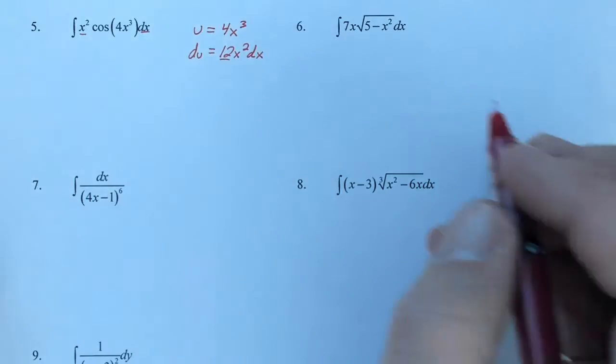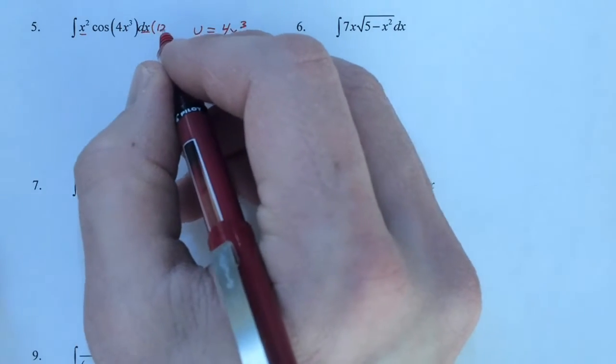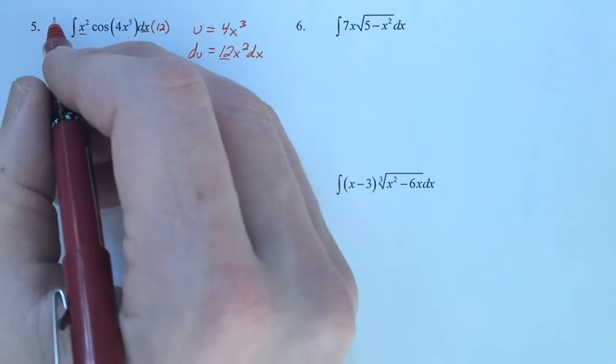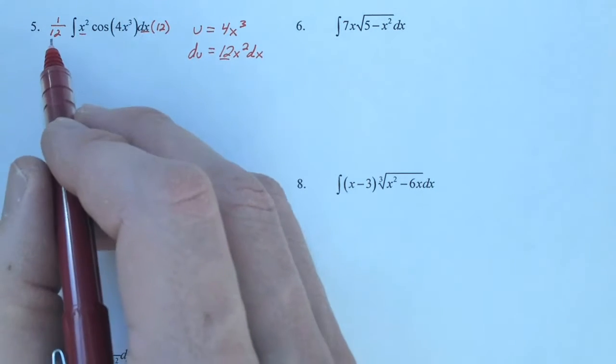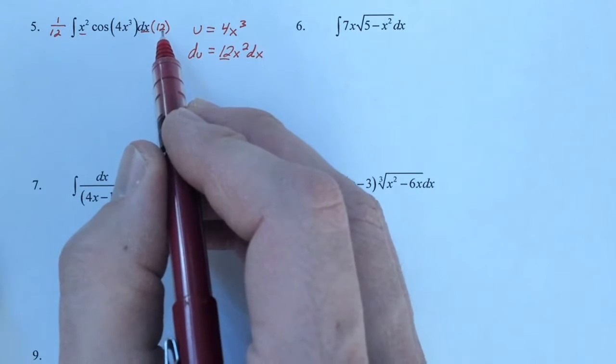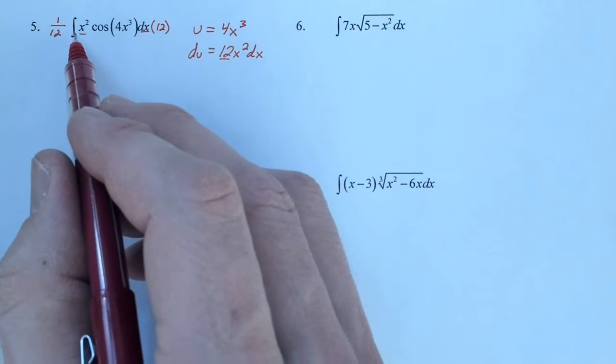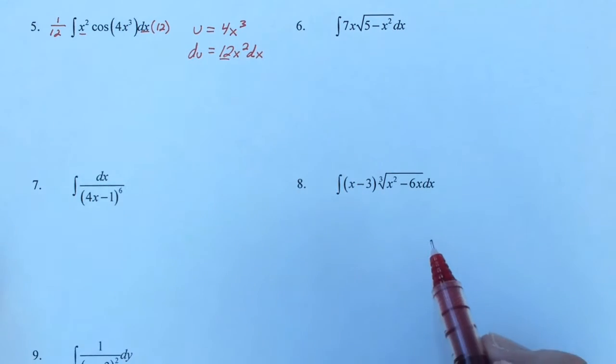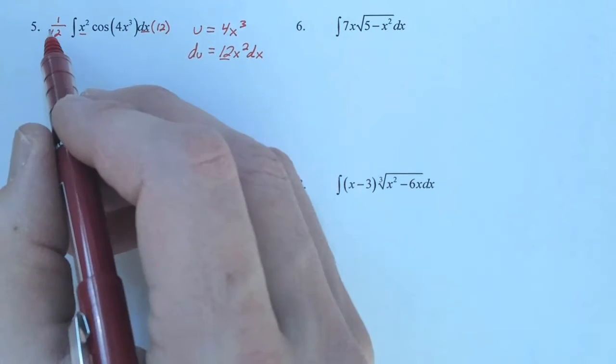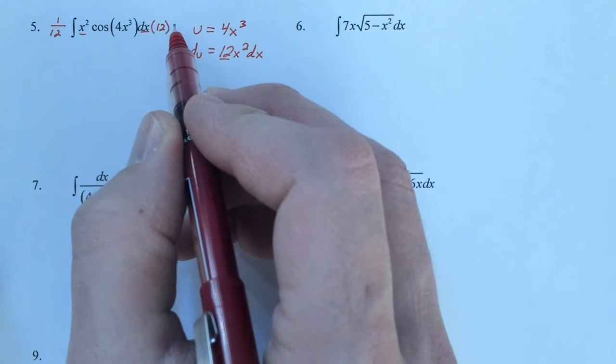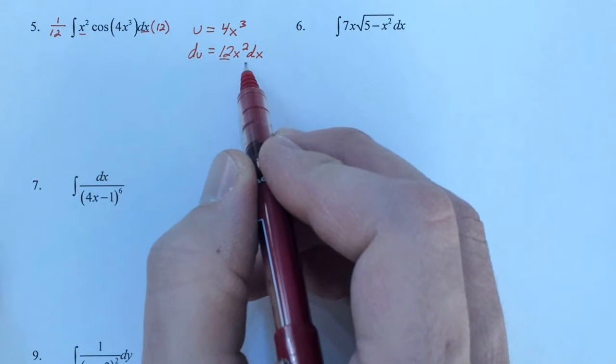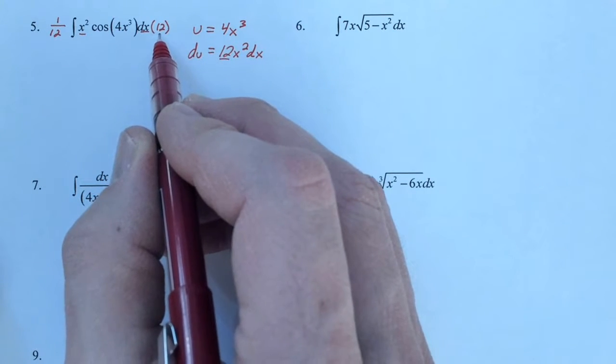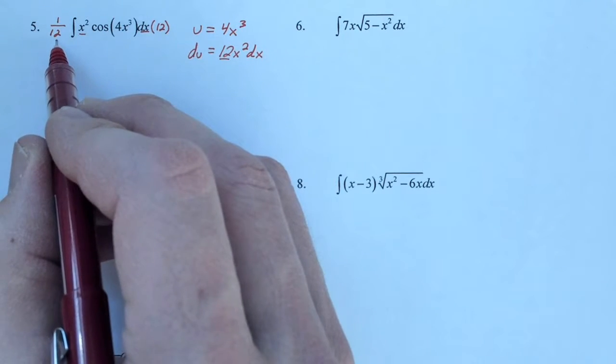So therefore, we need to put the 12 into the integrand, and we need to counterbalance it with 1/12 on the outside. The reason being is 1/12 times 12, they multiply together and they give us 1, which means we've only multiplied this expression by 1, which means we have not changed its value. Now the 1/12 could also be on the inside, but we don't want it on the inside because we only want 12x squared dx on the inside. So the 12 takes its place on the inside, the 1/12 will be on the outside.